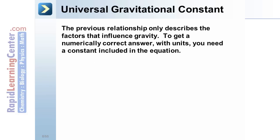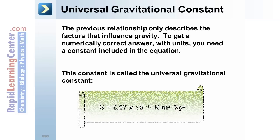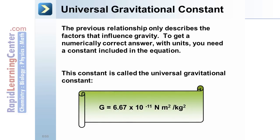Universal Gravitational Constant. The previous relationship only describes the factors that influence gravity. To get a numerically correct answer with the right units, you must add a constant to the equation. This constant is called the Universal Gravitational Constant.